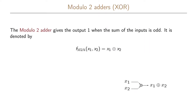The final function we're going to look at is the modulo-2 adder, also called the XOR function. The modulo-2 adder is defined as giving the output 1 when the sum of the inputs is odd, and is typically denoted as x1 XOR x2. We have two input variables x1 and x2 and one output u which is x1 XOR x2.